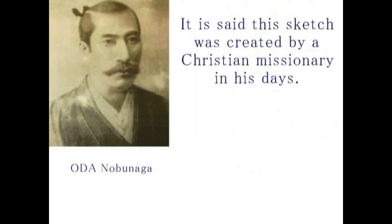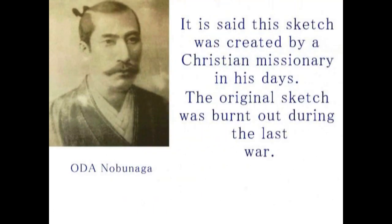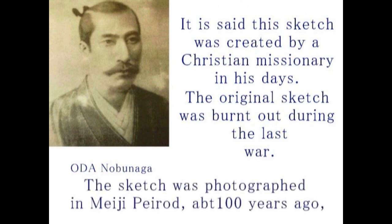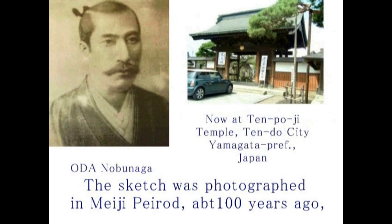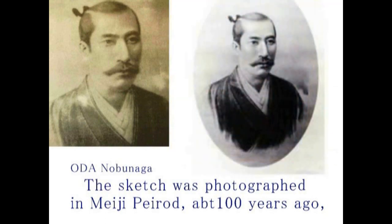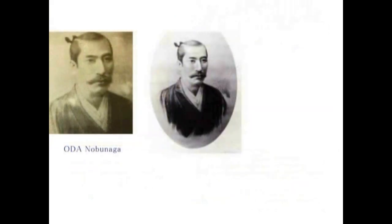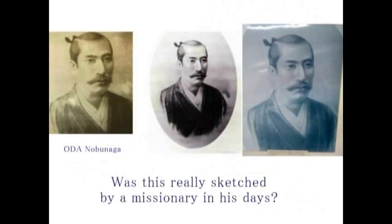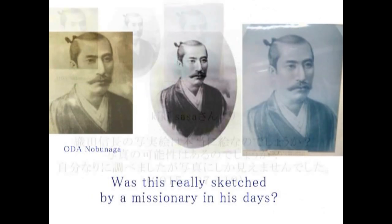ここに織田信長の肖像画があります。かつて日本にやってきた宣教師が描き残したという肖像画です。あまりにも精緻に描かれているという点で写真技術を使って描かれたのではないかと疑われています。現存する肖像画は明治時代に写真として残されたものです。原画は消失したということになっています。あまりにも精緻なため明治時代に捏造されたのではないかという説もあります。